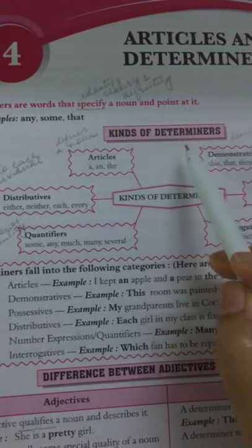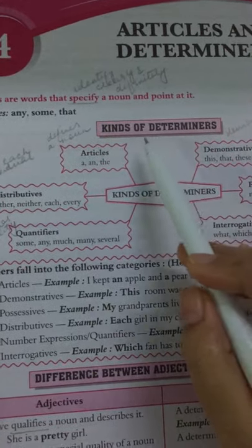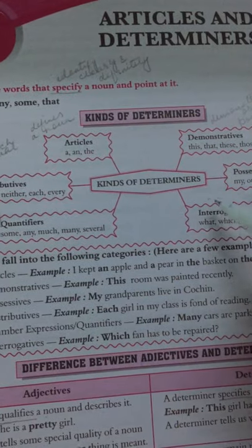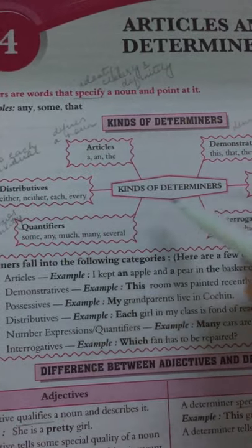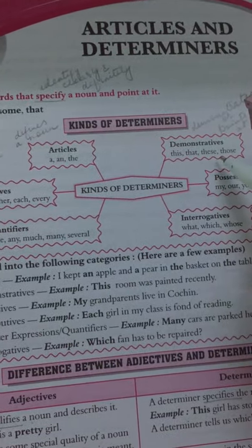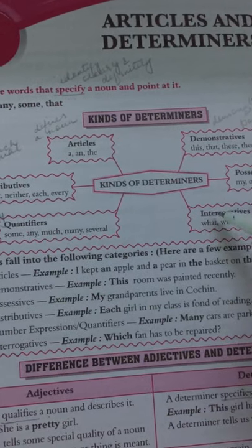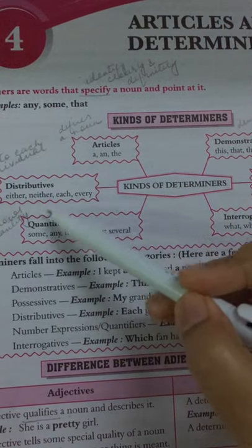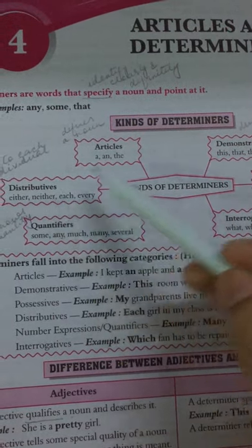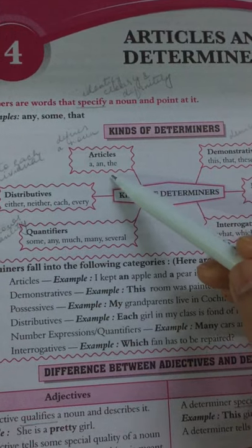There are six kinds of determiners as you can see in the picture: demonstratives, possessives, interrogatives, quantifiers, distributives, and articles.